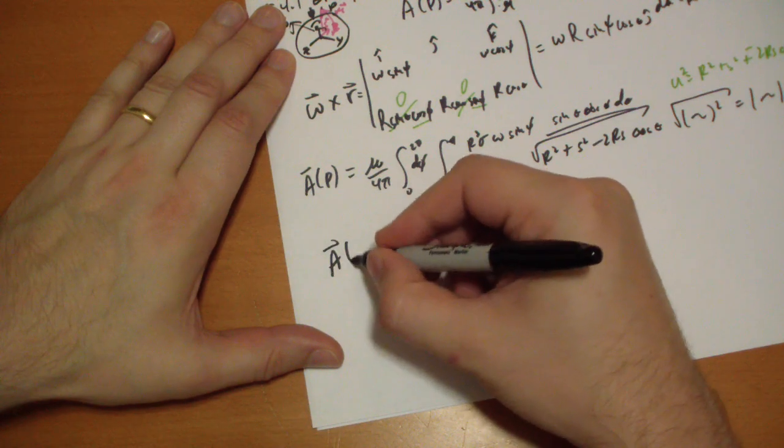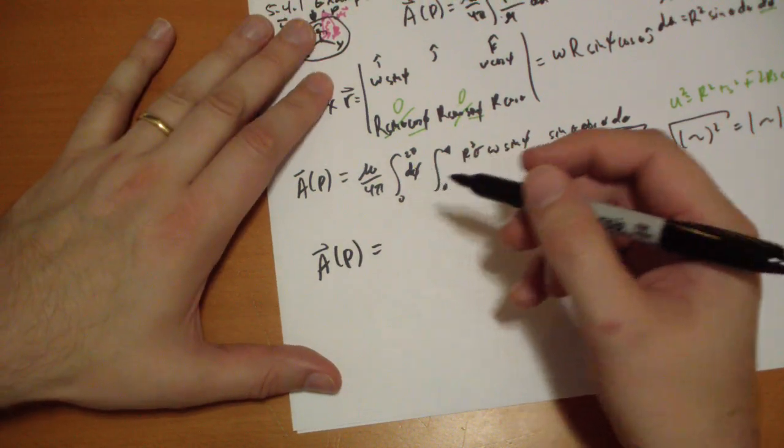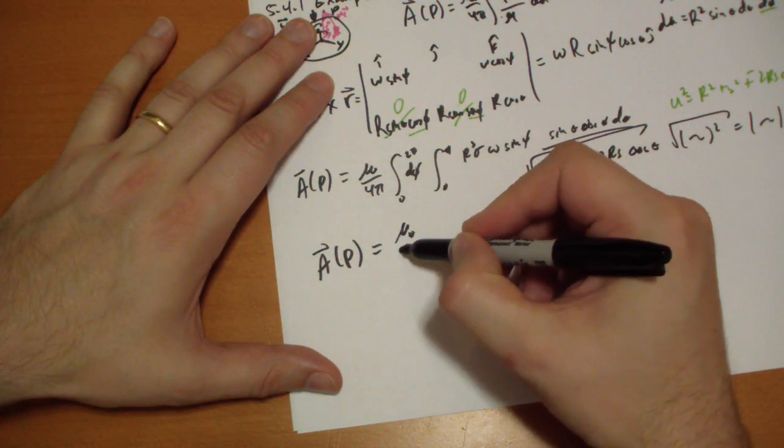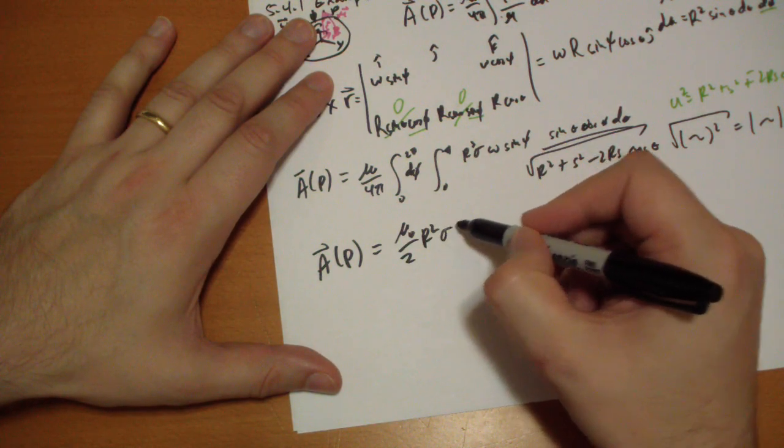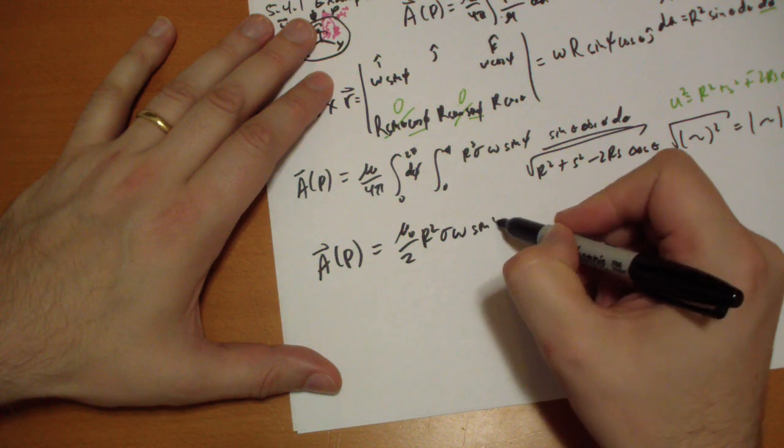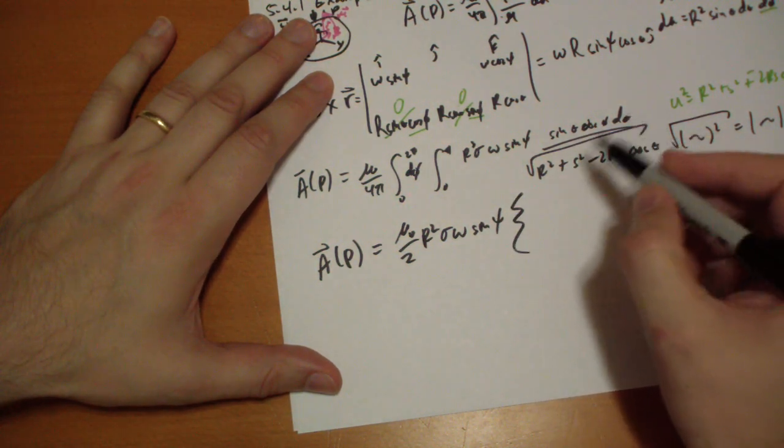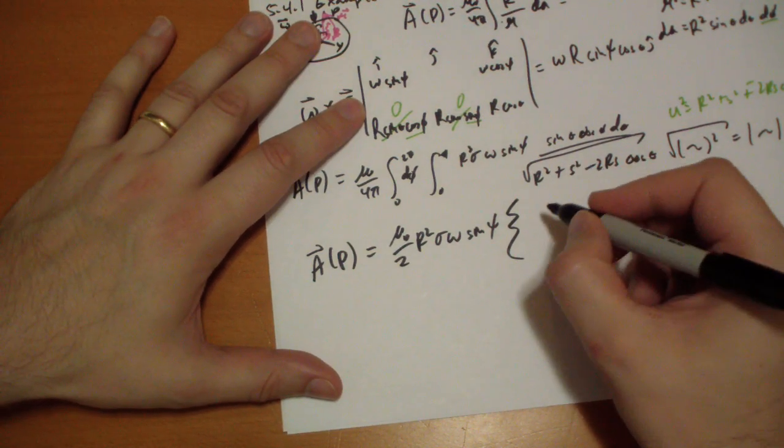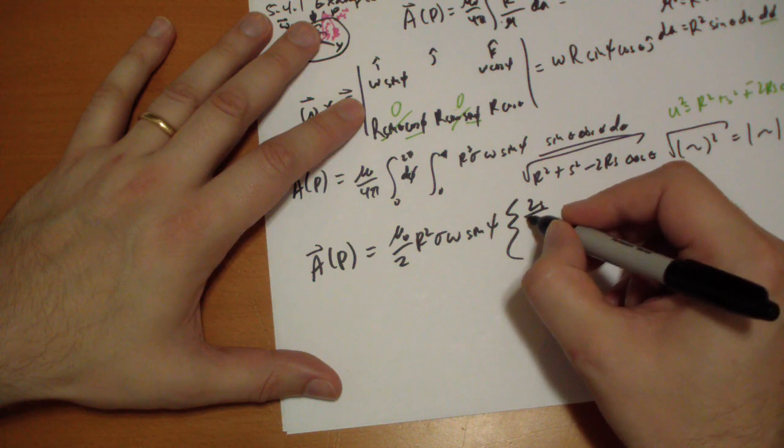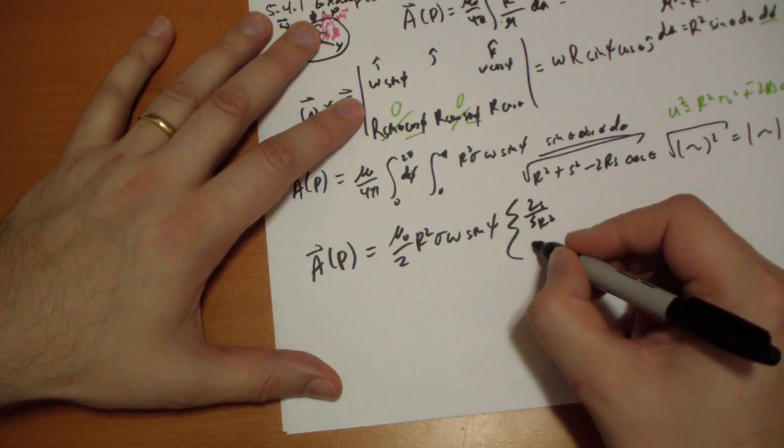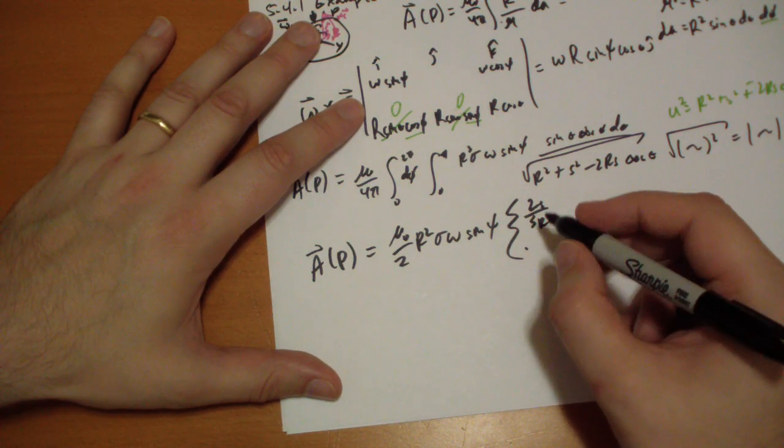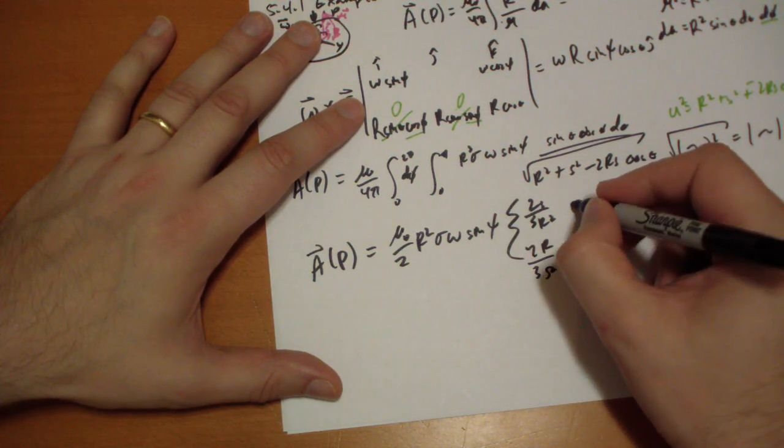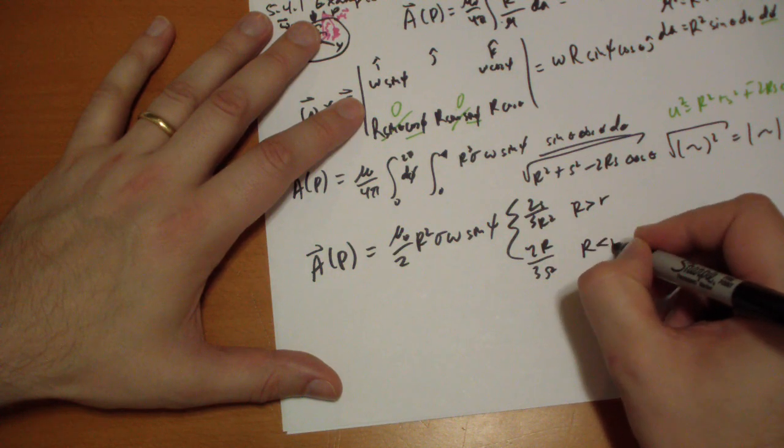The end result is equal to mu naught over 2 R squared sigma omega sine Psi. And when R is greater than S, when you're inside the sphere, you get 2 S over 3 R squared. And when it's outside, you get 2 R over 3 S squared. This is when R is greater than S and this is when R is less than S.